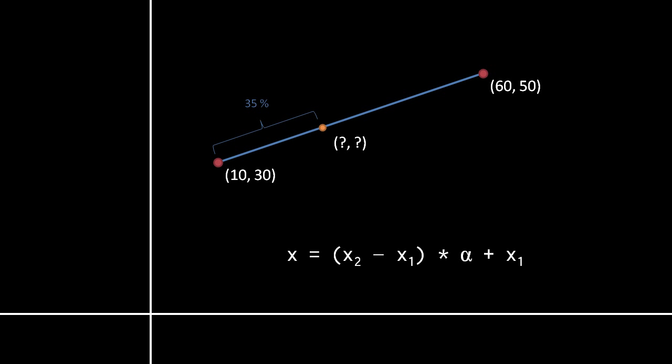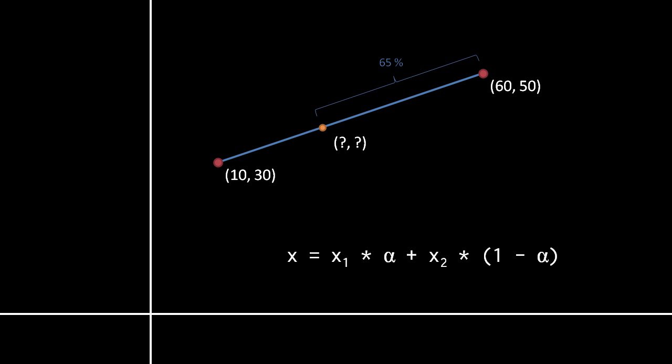A problem with this formula, though, is that it only works when x2 is greater than x1, and when the interpolation is expressed as the percentage of distance from x1 to x2, not from x2 to x1. So when using this formula in code, we may have to first determine whichever point has the greater x value, and then we may have to flip the alpha value by subtracting it from 1 — e.g. 0.2 would become 0.8. Generally, a better formula is the one we used in a previous video when composing colors with alpha transparency values. The way to think of it is that we're averaging the two x values but the contributions are not equal — x1 contributes 65% and x2 contributes 35%. Generalized, the formula is x = x1 × (1 − alpha) + x2 × alpha. Note that when the interpolation value is instead expressed as the distance from x2 to x1, the formula becomes x = x1 × alpha + x2 × (1 − alpha).